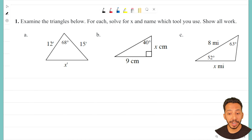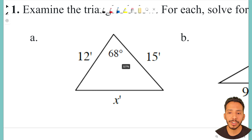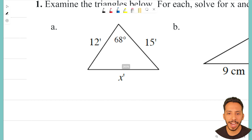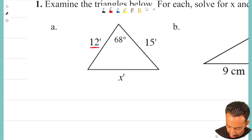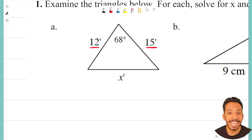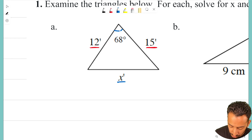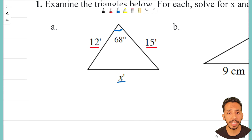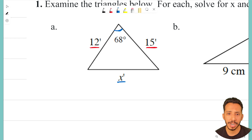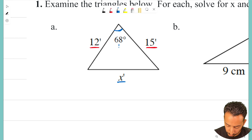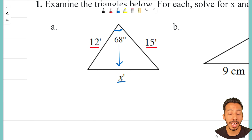We're jumping in on number one. I'm zooming in on letter A so we can focus on this triangle. I noticed I have two sides: one is 12 feet, the other is 15 feet, and I'm trying to find the third side X. The only other piece of information is that the top angle is 68 degrees. This is not a right triangle — there's no 90-degree angle. Some of you might be thinking Pythagorean theorem, but we cannot use that here because we don't have a right angle.